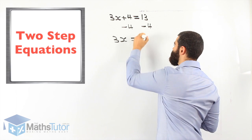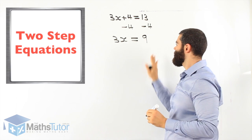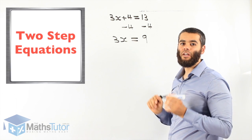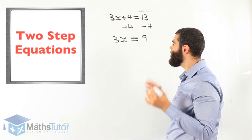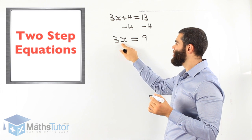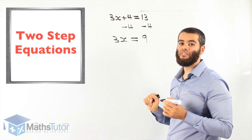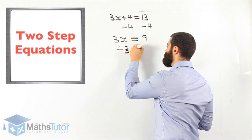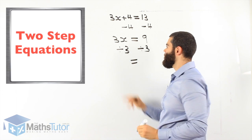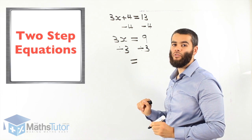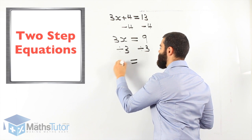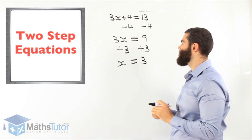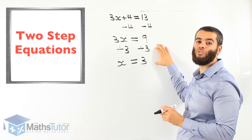So we have 3x, and minus 4 is gone. We're left with 3x. 13 take away 4 is 9. We now have a one-step equation where we only have one numeral to get rid of. We know 3x means 3 times x, so the opposite of times is divide. 3x divided by 3 is just 1x, and 9 divided by 3 is 3. Two-step equations — one step and two-step.